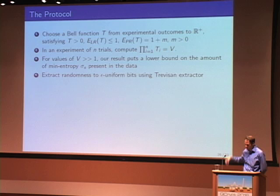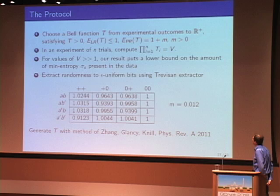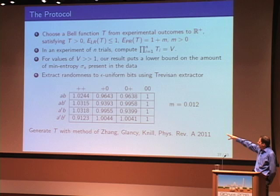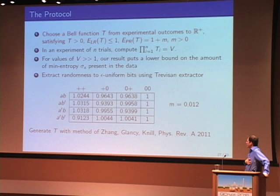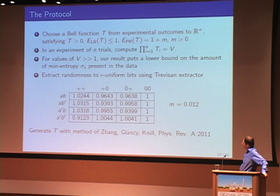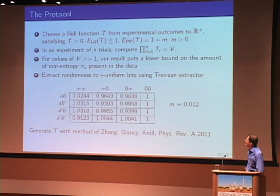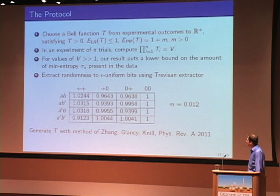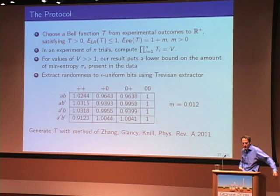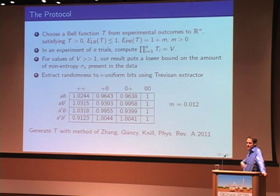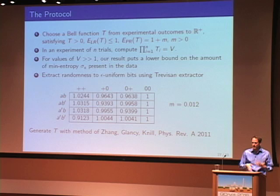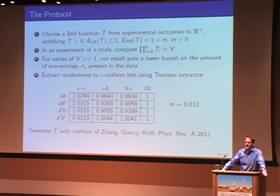So the protocol — I'm going to go through all these steps. You start by choosing a Bell function from your experimental outcomes to the positive numbers. For each particular settings-outcome combination that happens, you map that to a real number. Those real numbers are all kind of close to one — some are bigger and some are smaller. These particular numbers mean that the expected value of this Bell function T is going to be less than or equal to one for any local realist theory — that's my E subscript LRT ≤ 1, for equiprobable settings combinations. But if you were to use a PR box and see what would happen for the expected value of T given a PR box, you would get something a little bit bigger than one. So with this Bell function, if you start seeing a lot of things on average bigger than one, you're falsifying LR. That's the idea.